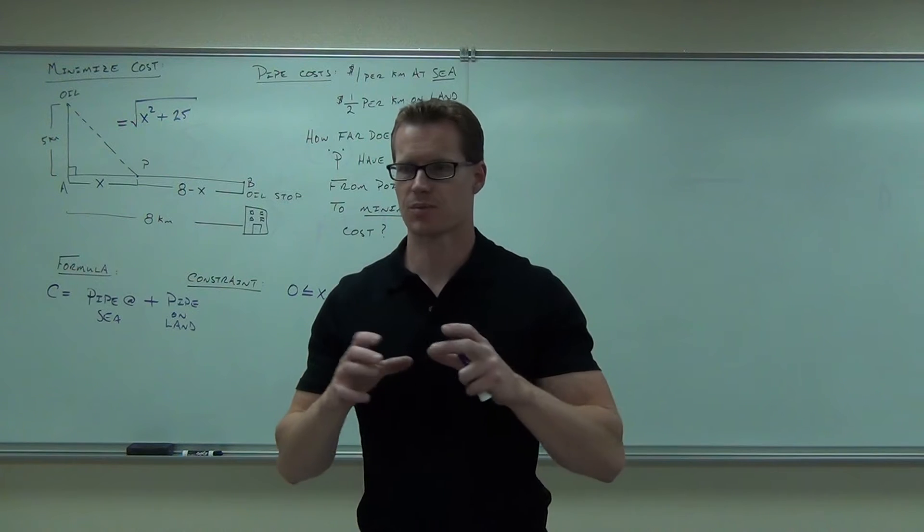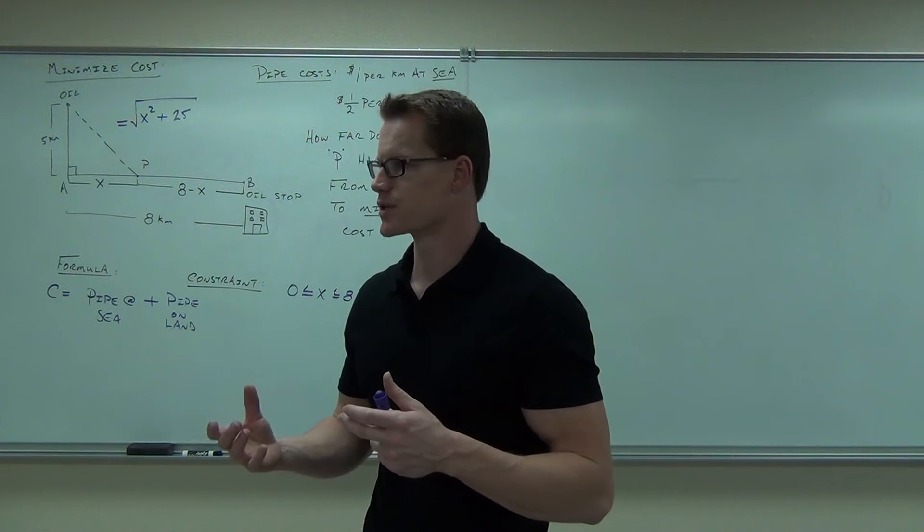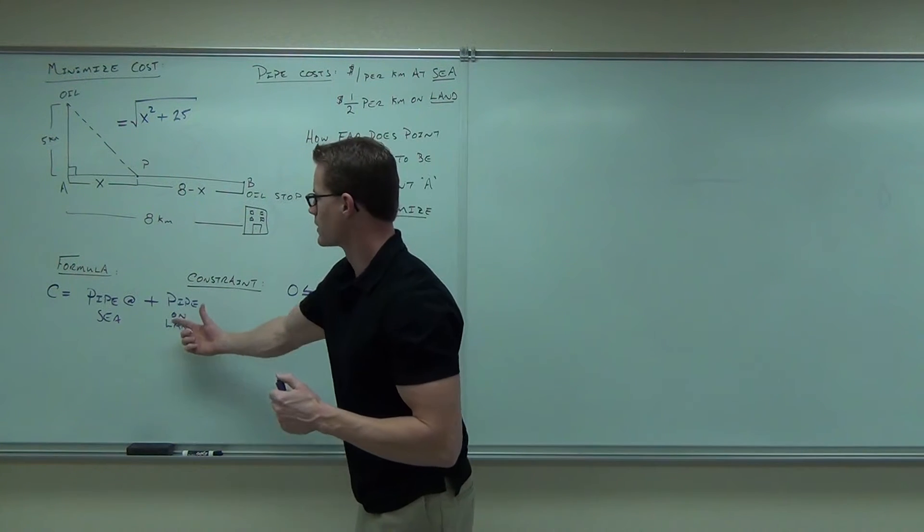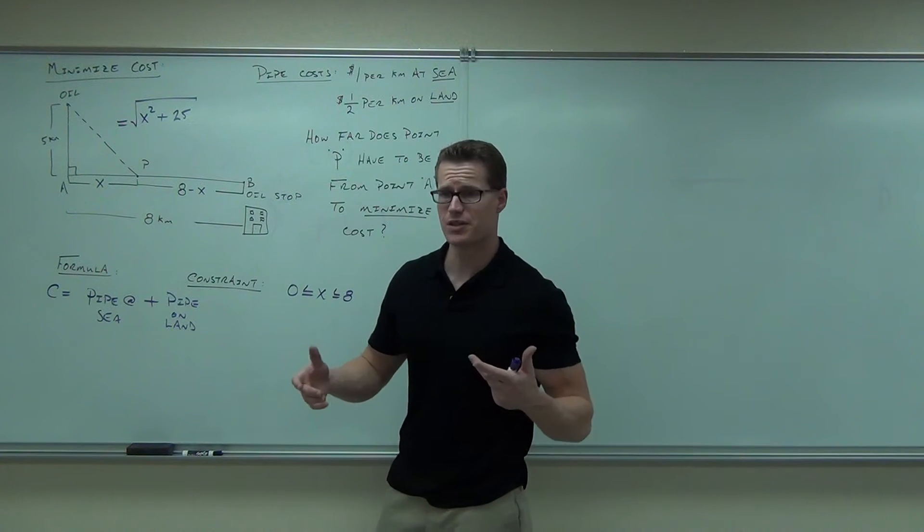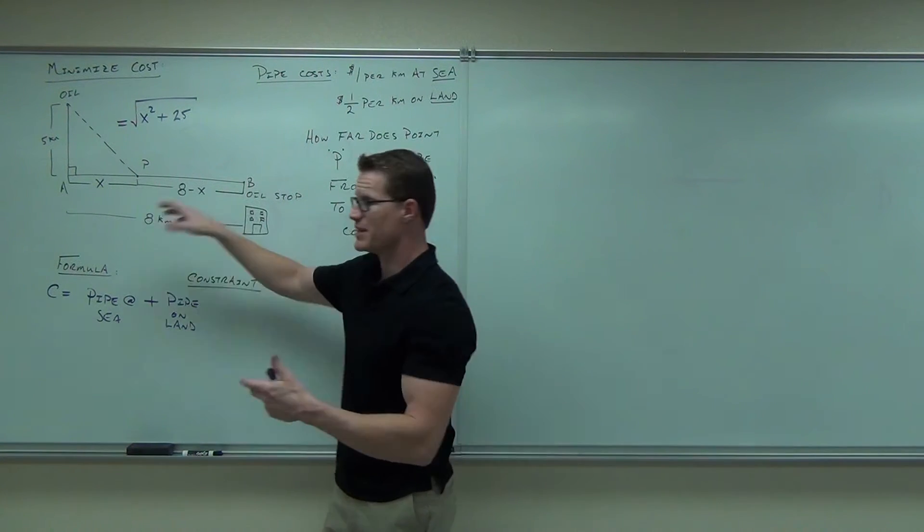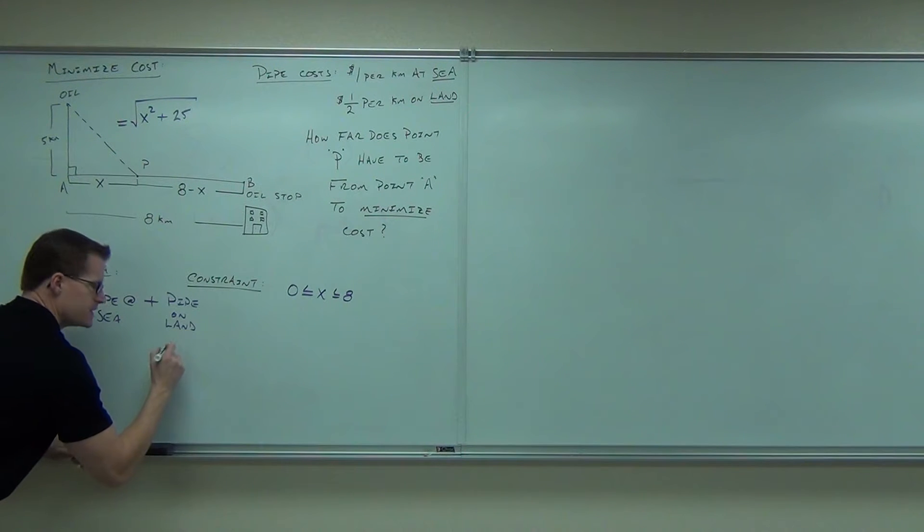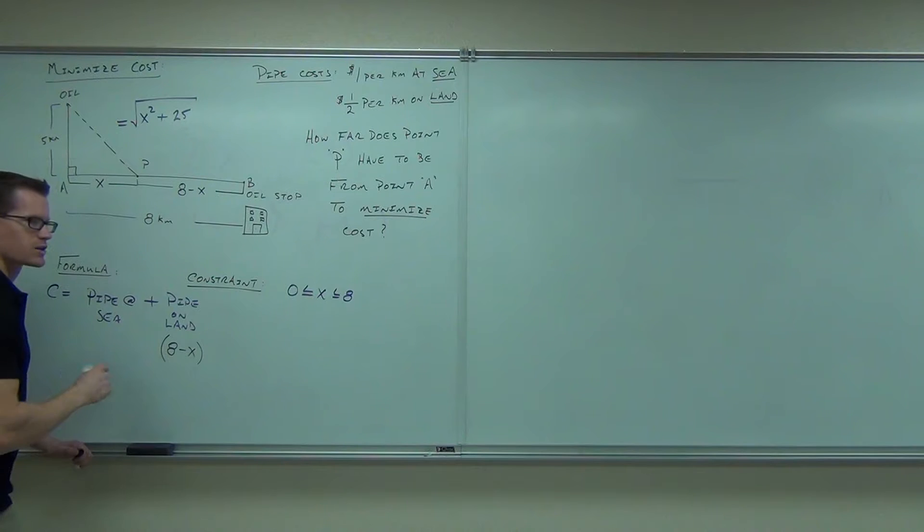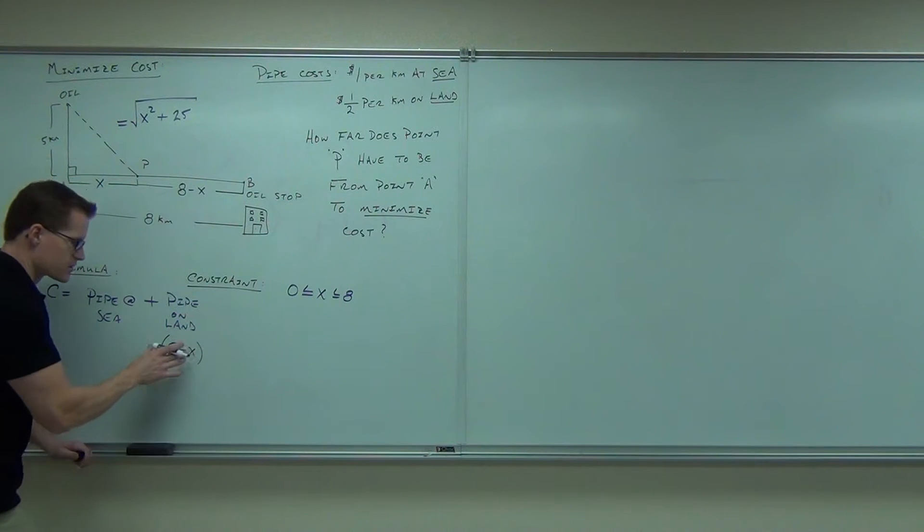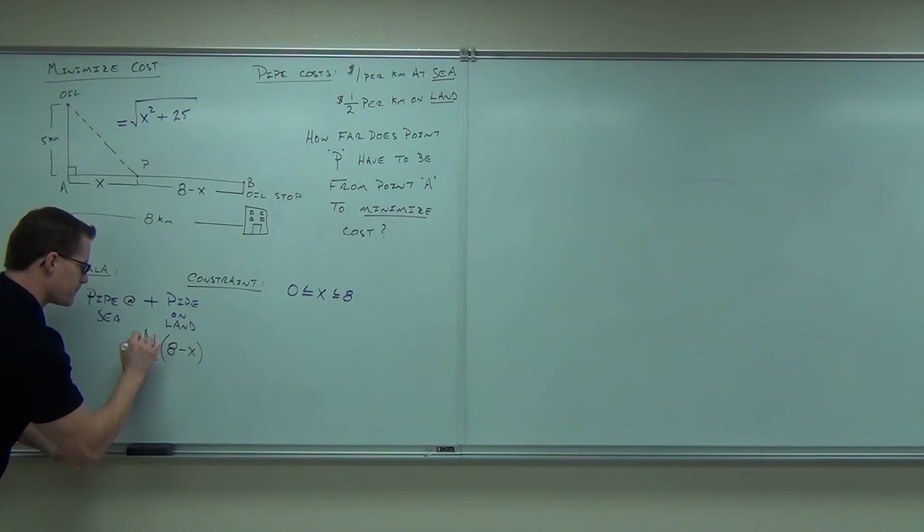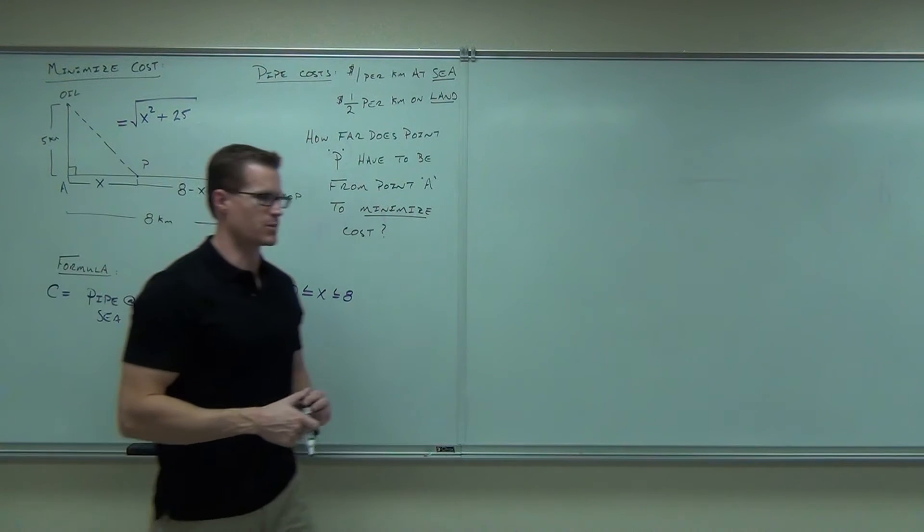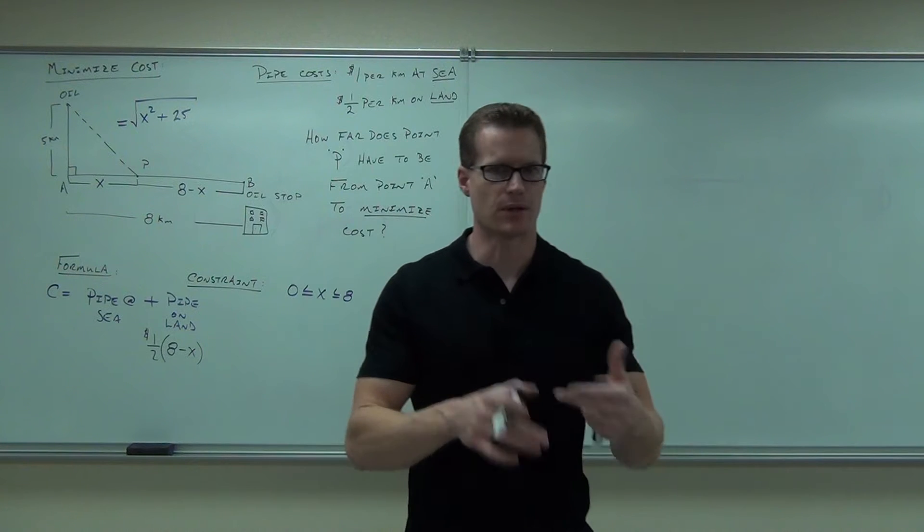Well, since we know how much it costs per kilometer, let's just figure out the kilometers. So the pipe on the land, we just talked about this, but the pipe on the land is from P to B. That's our 8 minus X. So if we know that the distance of pipe is 8 minus X, and it costs half a dollar per kilometer, this is how many kilometers we're going to have of land pipe. We're just going to take half of that, and that's going to be the number of dollars we're going to spend for the pipe on the land.